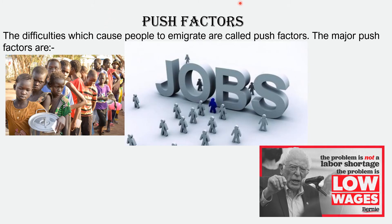Let us first take up the push factors. What causes people to move away from one place to another? Most of the time it is the difficulties which people face that force them to emigrate — that is, to move away from their place of stay or their country, sometimes their continent, and move to another place. The major push factors are lack of food, famine, and droughts, which force people to move to a place where there will be abundance of food and other resources.